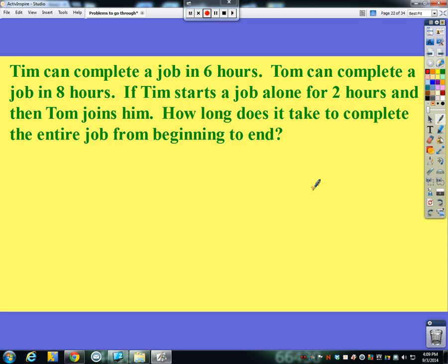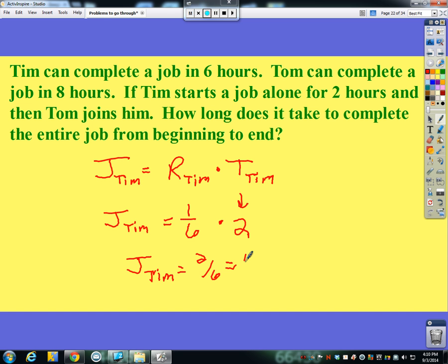Now Tim and Tom aren't working together the entire time, so what we need to consider first is how much of one job has Tim completed in the two hours? If we have jobs sub Tim equals rate sub Tim times time sub Tim, we know Tim's working two hours, we know he can work at one-sixth, one job per six hours. So two times a sixth makes two-sixths, which is a third of a job. He's already got a third of the job done, which means when Tom jumps in, they have two-thirds of a job to do together.